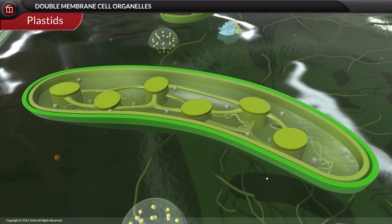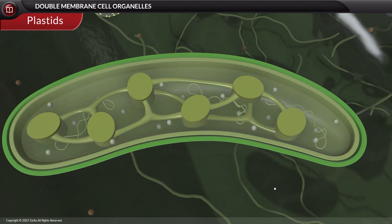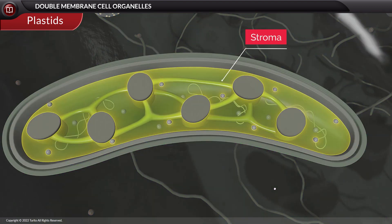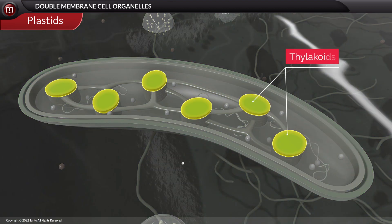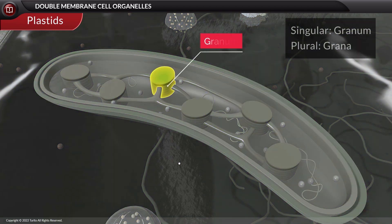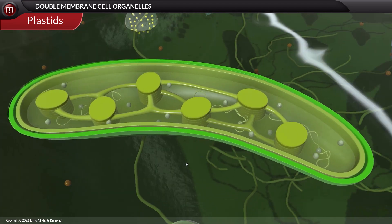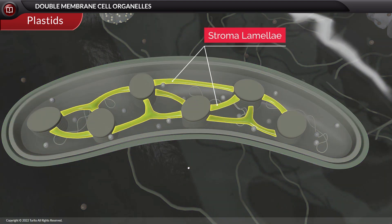Structurally, chloroplasts are double membranous cell organelles. The membranes enclose a fluid matrix called stroma and membranous sacs called thylakoids. Thylakoids are flattened discs and are arranged in stacks called grana. There are many sets of grana present in the chloroplast and are interconnected by stroma lamellae.